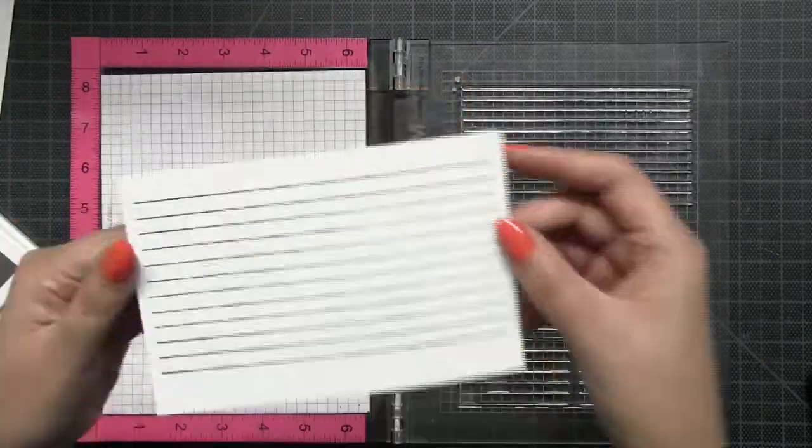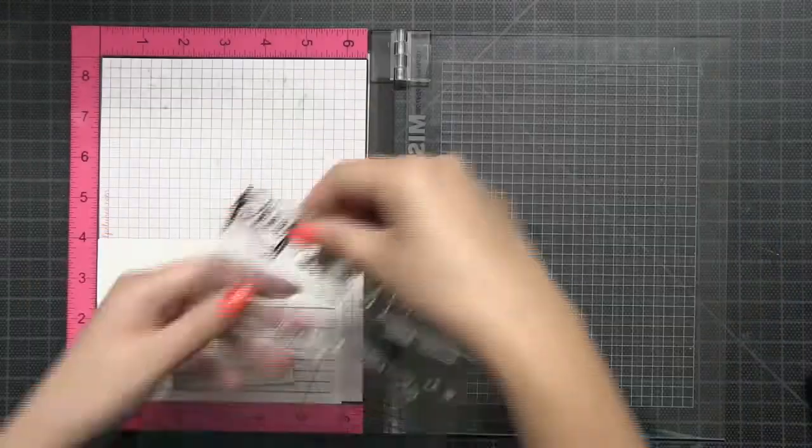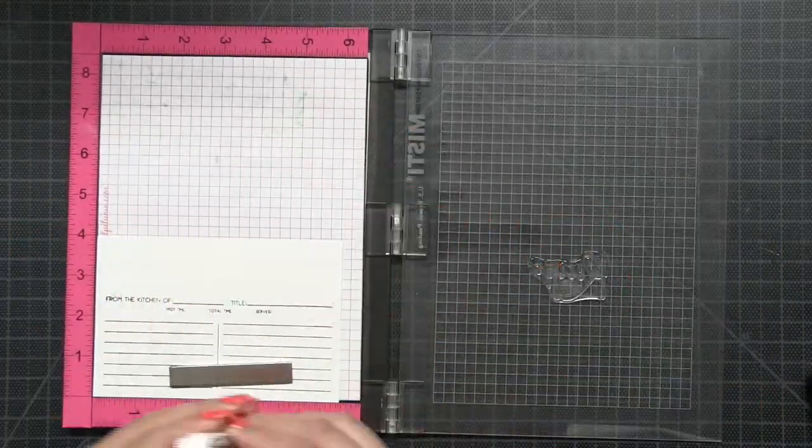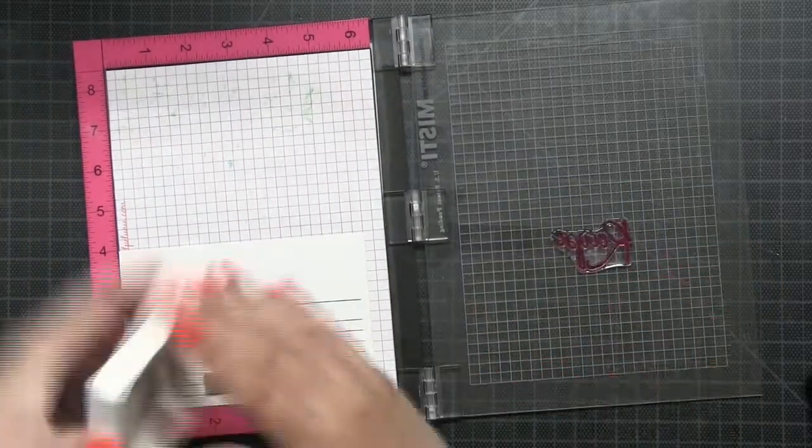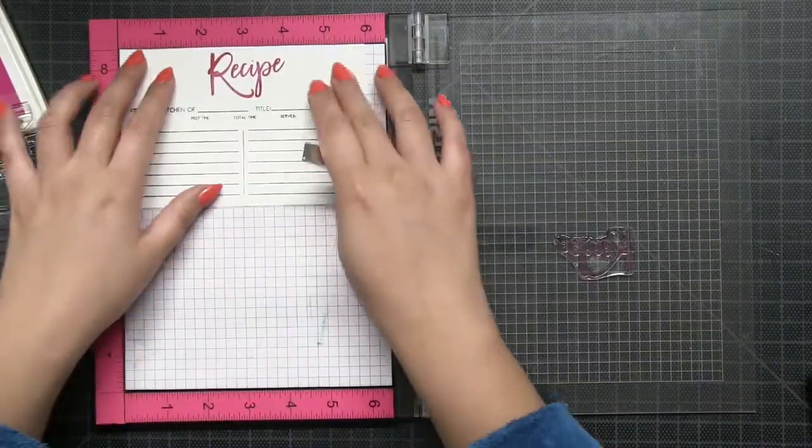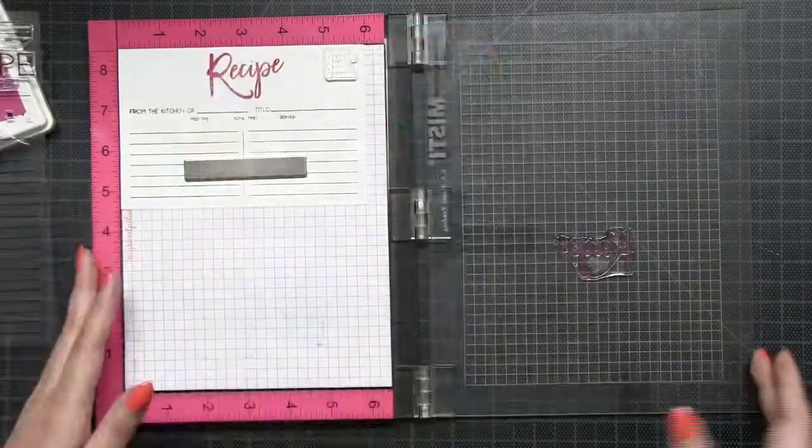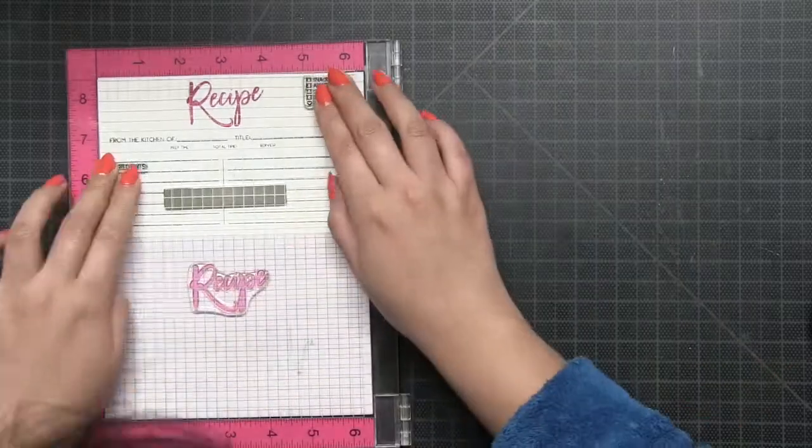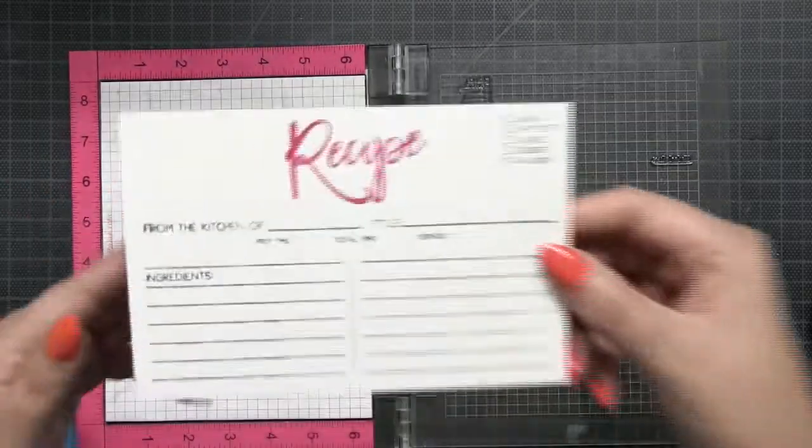The one with the lines going all the way across - this is the area I'll write in the directions of my recipe. Next I'll use the script font for the recipe title and I'm going to stamp this using our cosmopolitan pink hybrid ink. However, I am going to switch this ink up later with the soft garnet ink because I think that the color just goes better with the overall design.